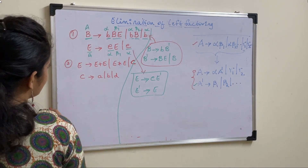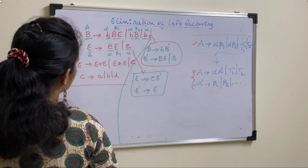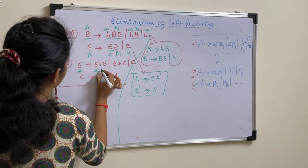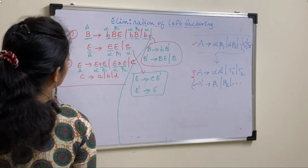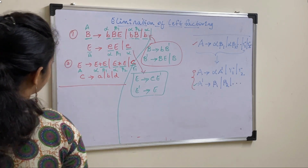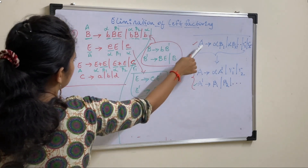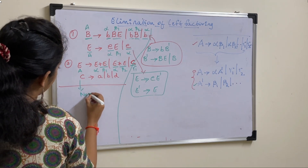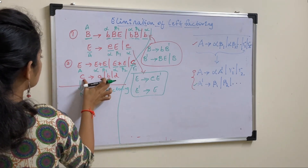Now let us solve the second example. Check whether this production has left factoring. A derives alpha beta1 or alpha beta2 — here the symbol is different, so this should not be alpha. It should be taken as gamma1. Check the second production — it is not in the form of left factoring. So this production is not having left factoring, and there is no need to solve anything for it.